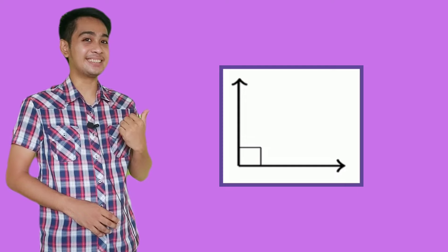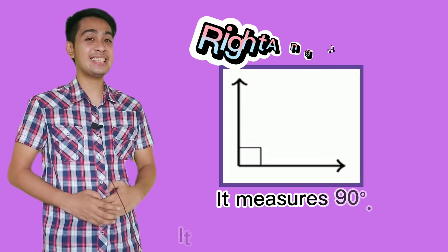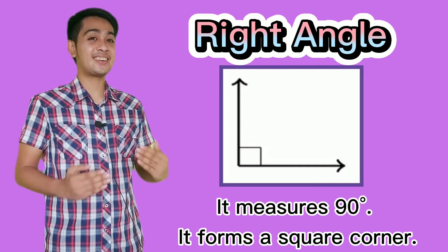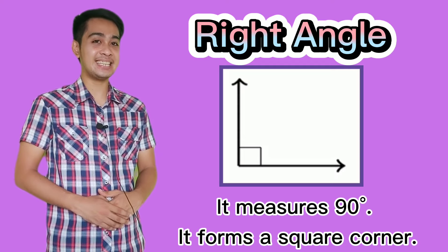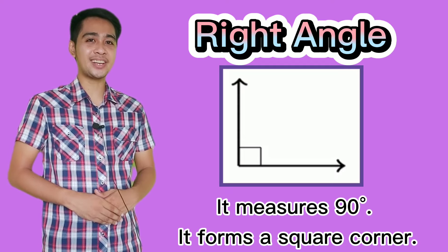How about this one? Very good. It's a right angle. A right angle measures exactly 90 degrees and it forms a square corner.